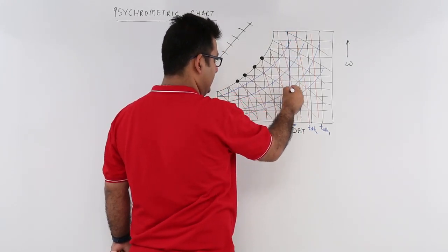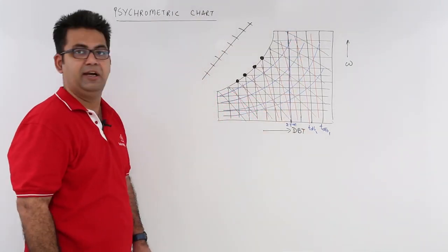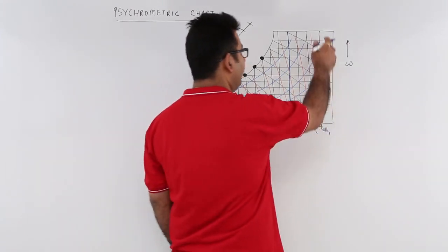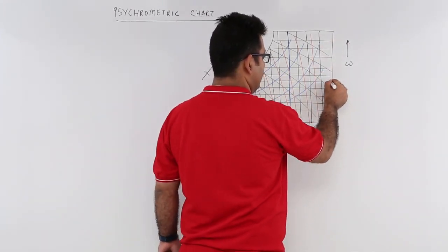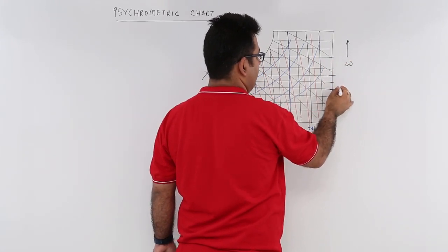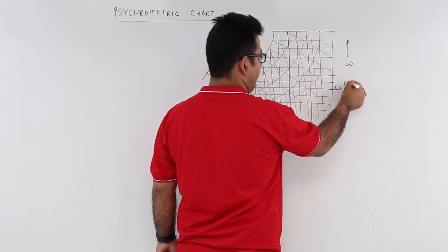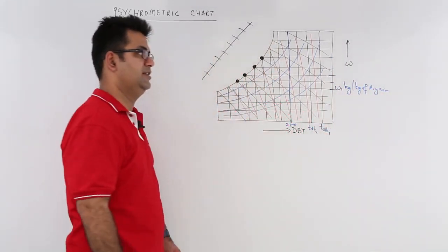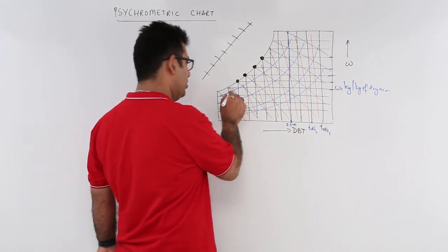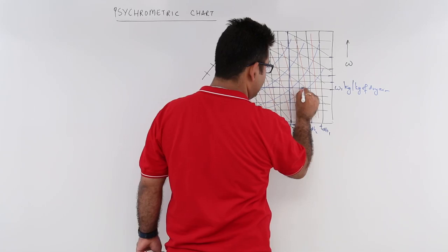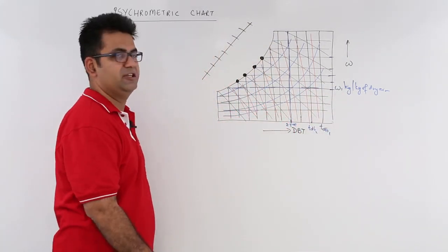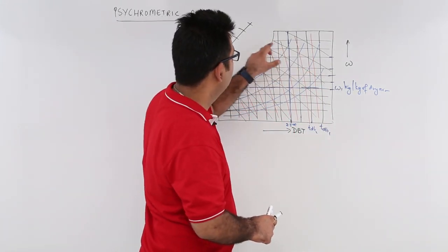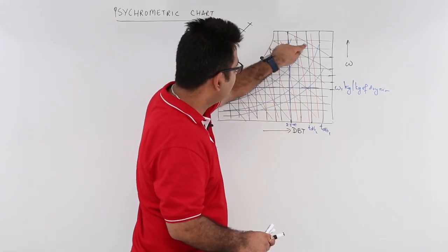So if you have a dry bulb temperature of 25 degrees Celsius, this entire vertical line is showing 25°C of DBT. Then you have the horizontal lines which cut on the vertical axis — this is the specific humidity. Let's say this is omega 1 kg of water vapor per kg of dry air. This entire horizontal line indicates the omega 1 value of specific humidity.